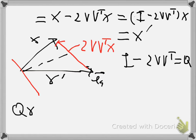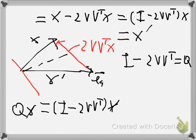To summarize: you start with vector x, perform the reflection to get x', then find vector u. The vector u can be expressed as two times the unit vector of the axis parallel to u, times the projection of x onto v. And that gives you the Householder formula.